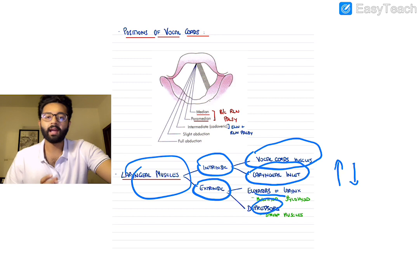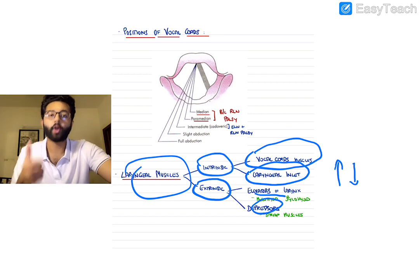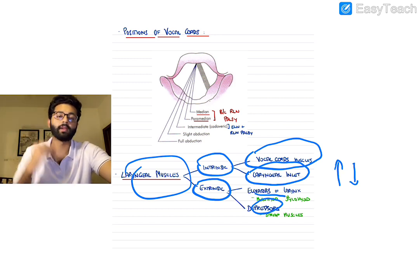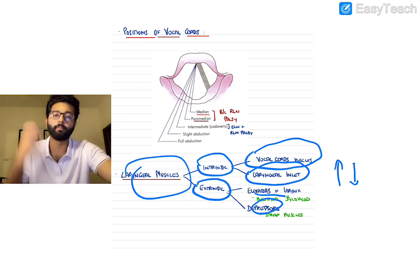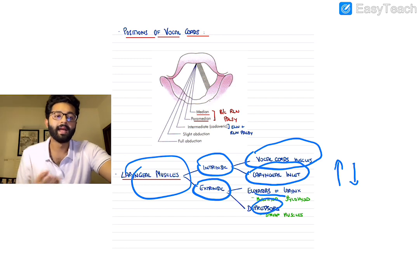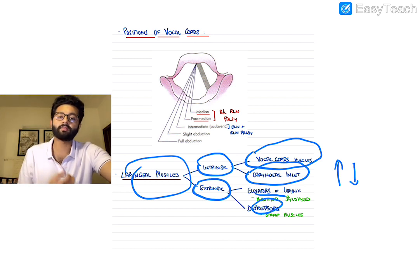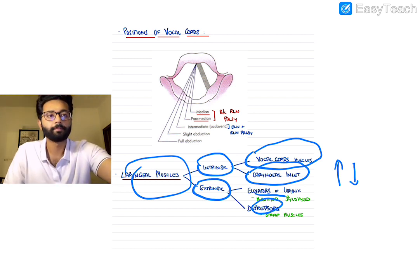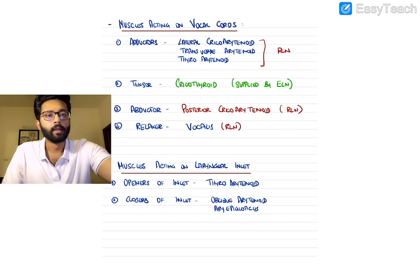The elevators of the larynx are just two: mylohyoid and stylohyoid. Remember, these lie above the level of the larynx so they pull the larynx up. The depressors of the larynx are nothing but your strap muscles.